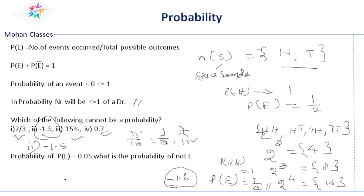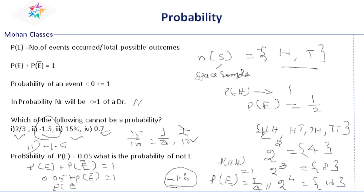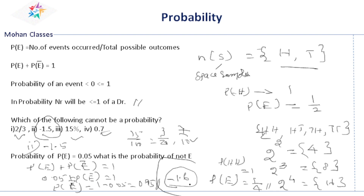Here, P of E is 0.05. What is the probability of not E? We know that P of E plus P of not E is equal to 1. Here P of E is 0.05. Therefore, P of not E is equal to 1 minus 0.05, which is equal to 0.95. That is the answer. If you like this video, kindly share it with your friends and do not forget to subscribe. Thank you.